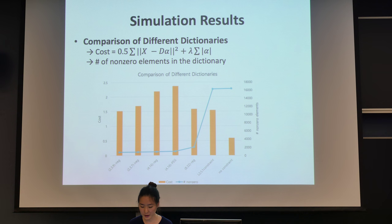You can see that our method has much less number of non-zero elements in the matrix. It's like 1,000 in our method, but in the existing algorithm, there are like 16,000 non-zero elements. But the difference in the cost function is not really that significant.